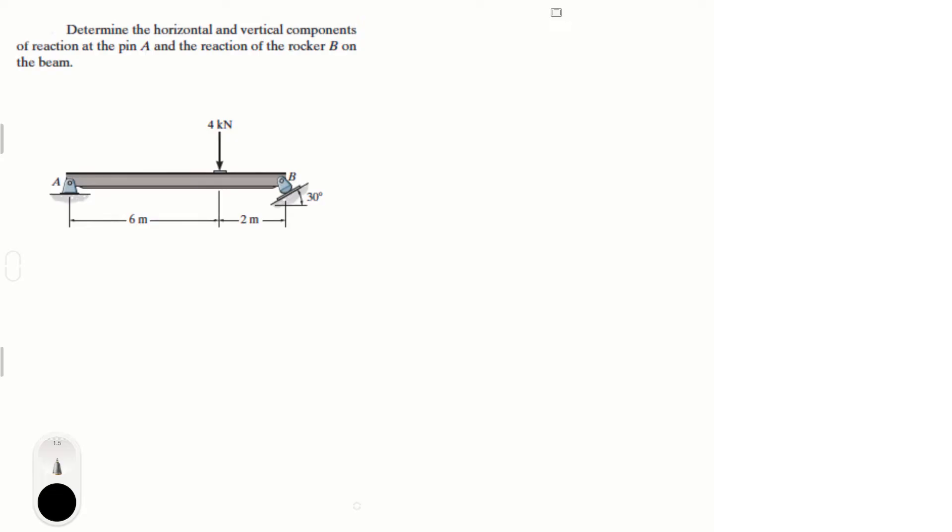So first, it's always good to draw the free body diagram. You know you have a reaction here. Let's call this reaction F of A - I'm sorry, F of B, since it's at point B. And then at point A you have two reactions: a vertical reaction, let's call it F_A in the Y, and a horizontal, which we're going to call F_A in the X.